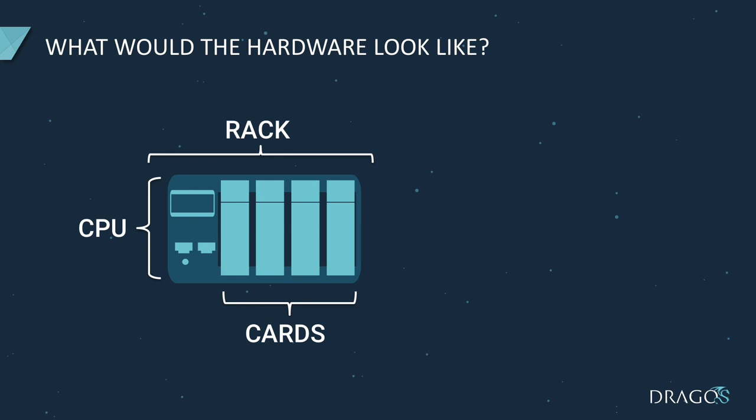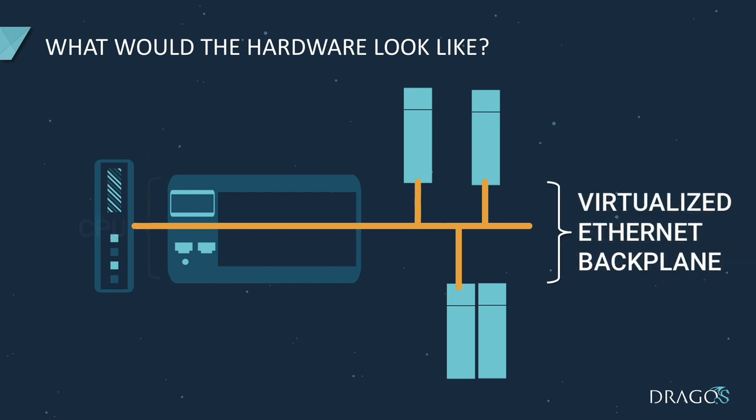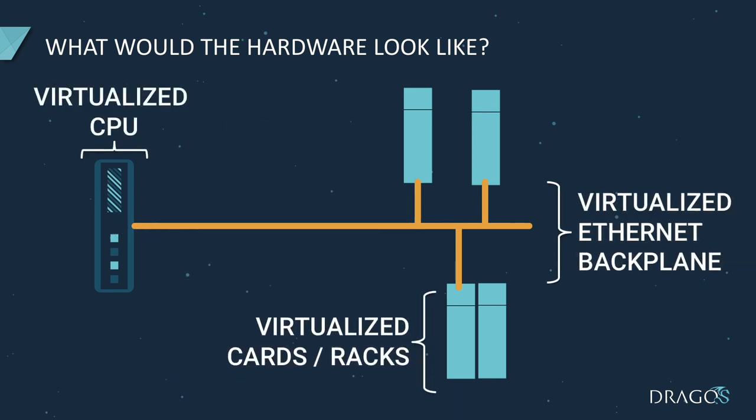If we were to create a virtualization layer around this, suddenly we're able to potentially get rid of the rack, replace the CPU with maybe an industrial PC or a proper server depending on environmental conditions. We're able to move racks and cards around — because the whole backplane is virtualized, those cards could be anywhere and the PLC would still believe they're on the same physical rack. Moving that backplane to a low-latency fiber optic network rather than the old serial bus would allow it to spread across a plant and allow much more flexibility in how those cards are deployed.